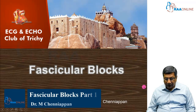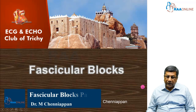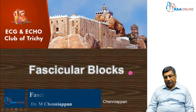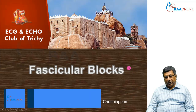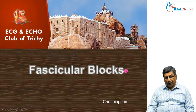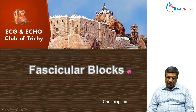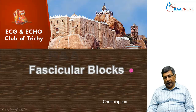After bundle branch block, we are going to see the fascicular blocks. The fascicular blocks, as you know, exist only for the left bundle. The two fascicles are the left anterior fascicle and left posterior fascicle. It is possible to diagnose individual fascicular blocks from the electrocardiogram.